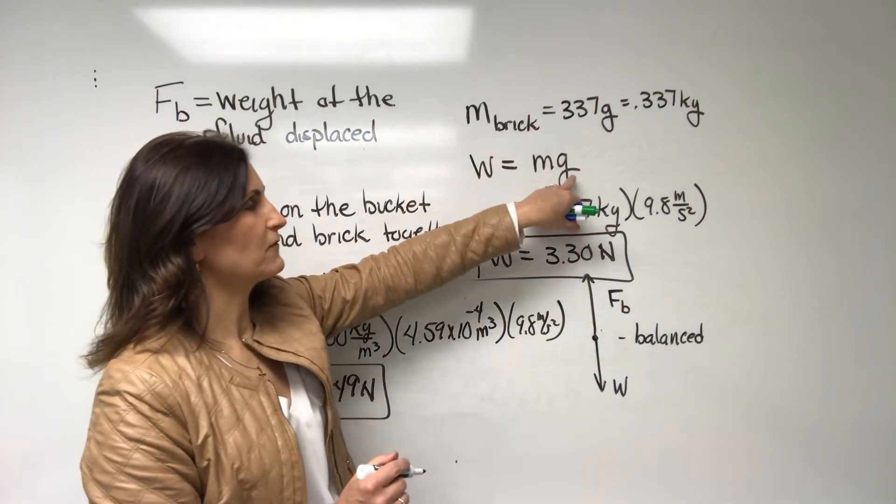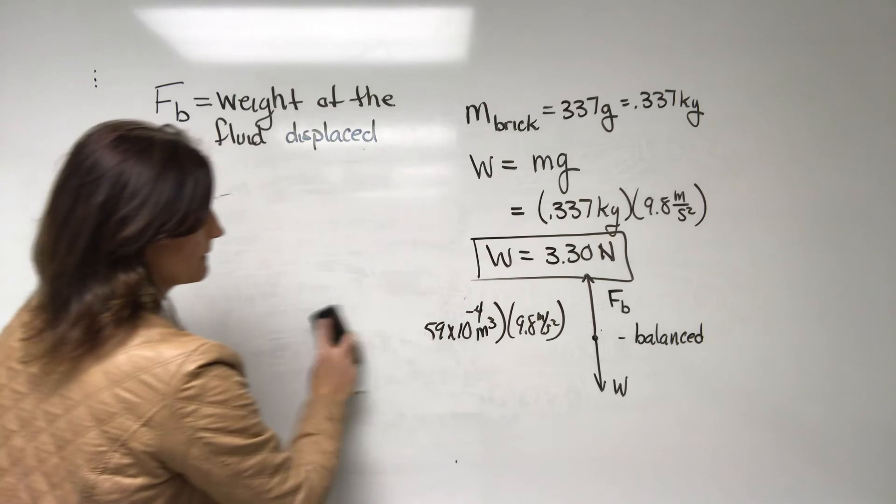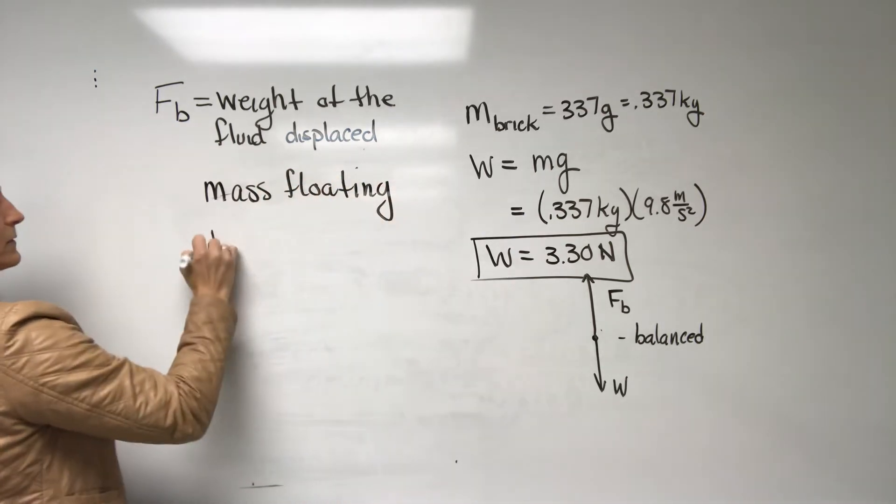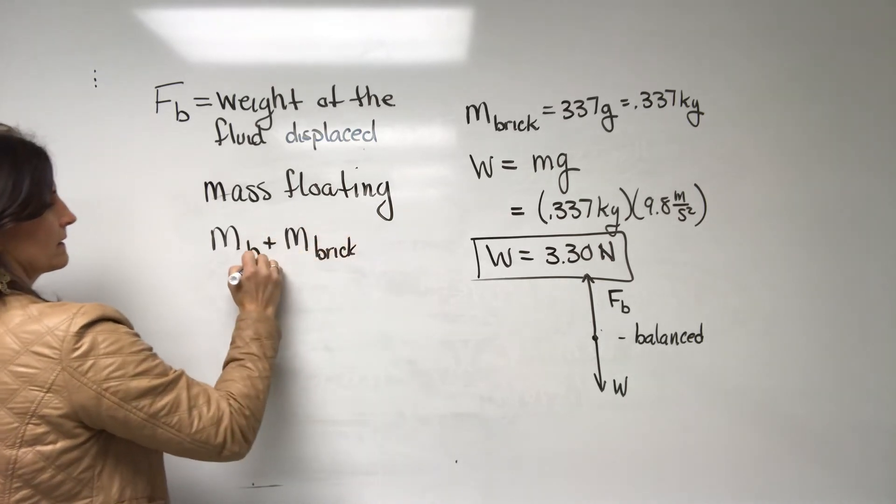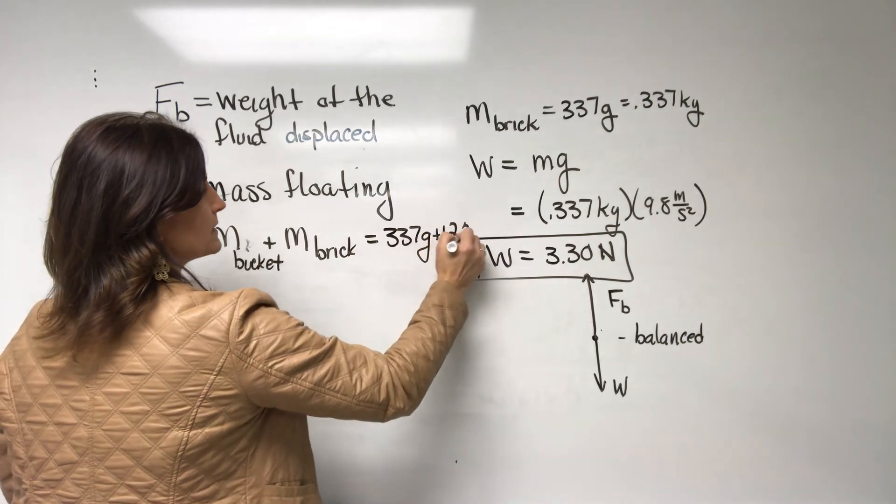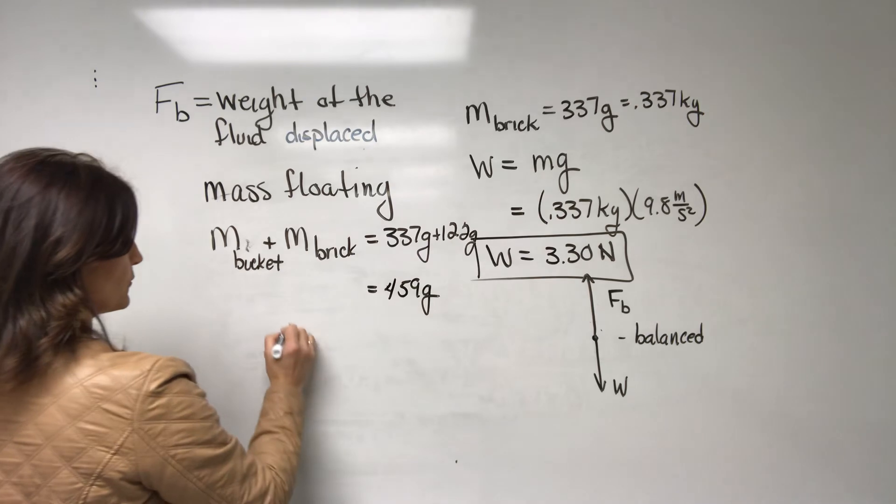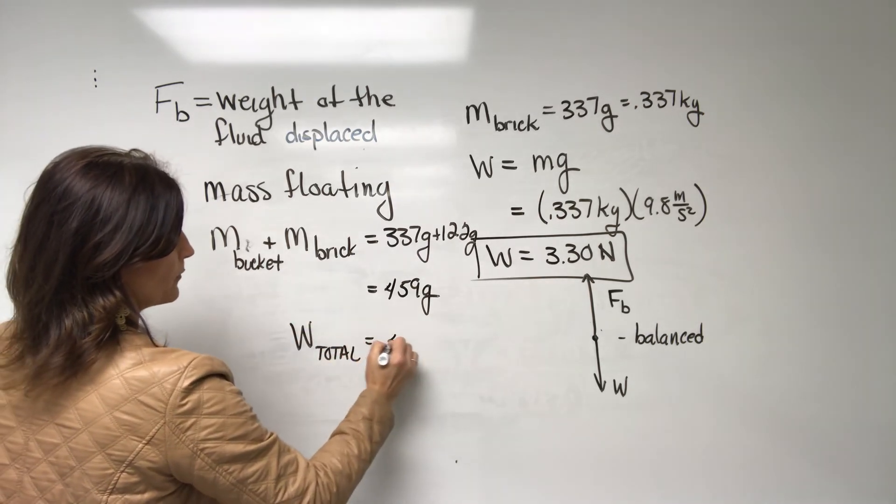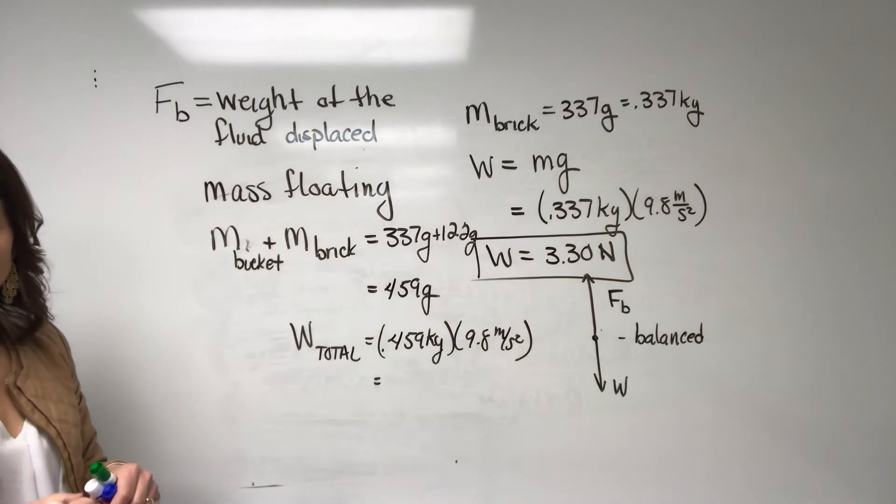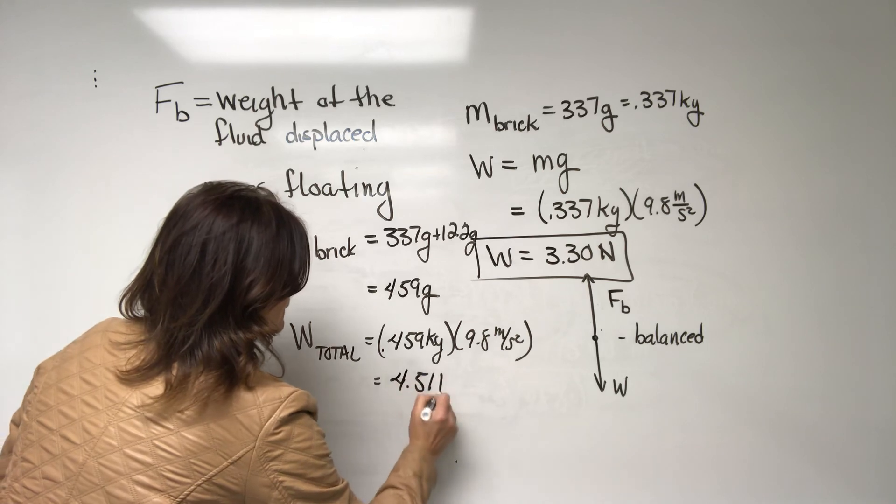So our total mass being floated was not 337. But if we'd add the mass of the bucket, the mass floating was mass of the bucket plus mass of the brick, which would be equal to 337 grams plus 122 grams. For a total of 459 grams. So your weight total would have been 0.459 kilograms times 9.8 meters per second squared. So the total weight of the whole system, right? If we plug that in there, I think I get 4.5 is the weight total.